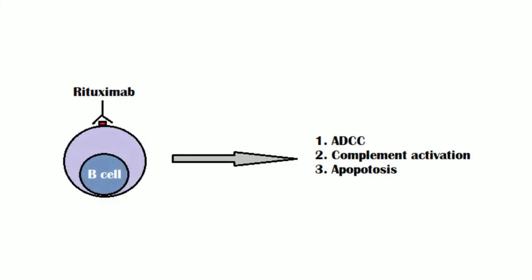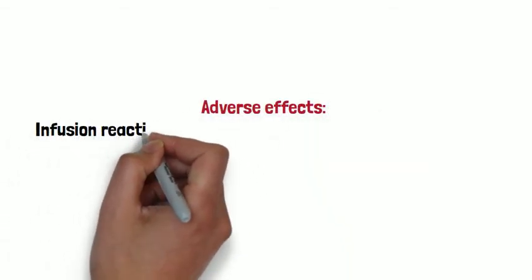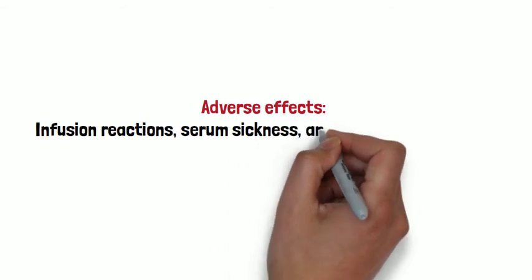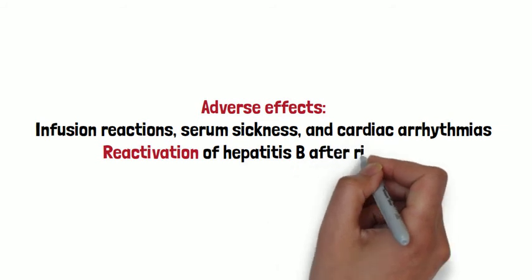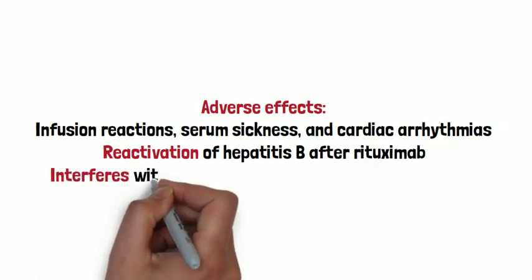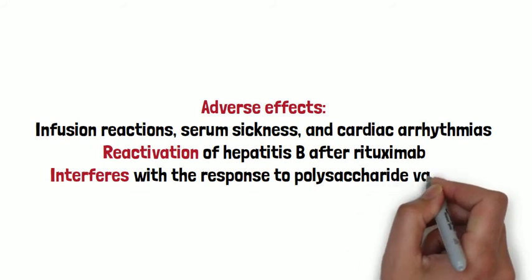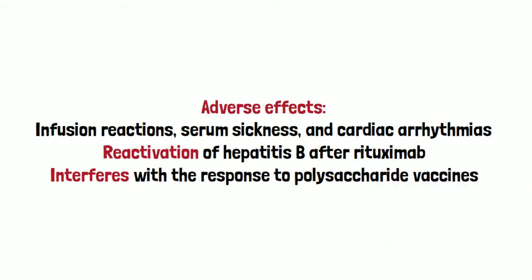Rituximab is an antibody against CD20, or B-cells. It destroys B-cells by antibody-dependent cell-mediated cytotoxicity and complement activation. Side effects include infusion reaction, serum sickness, cardiac arrhythmias, reactivation of hepatitis B, and interference with response to polysaccharide vaccines. In patients who may subsequently undergo splenectomy, immunizations must be administered prior to rituximab.